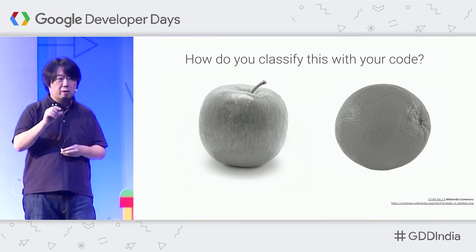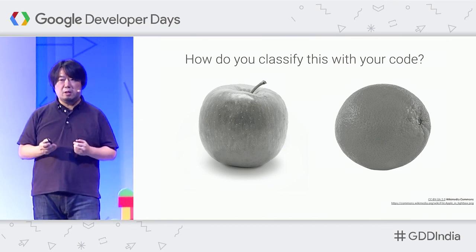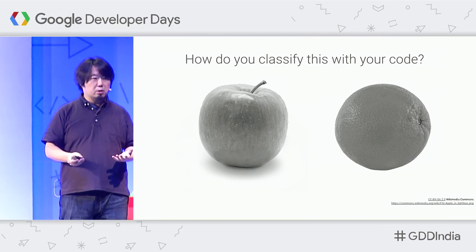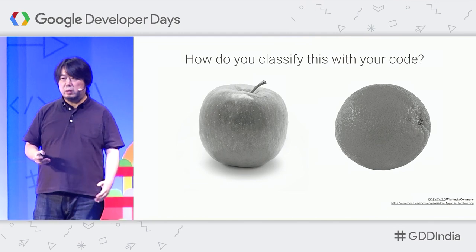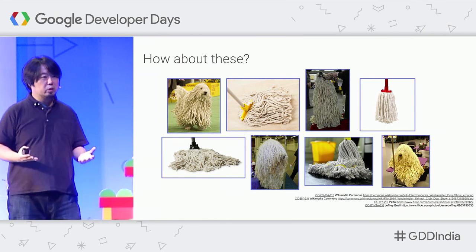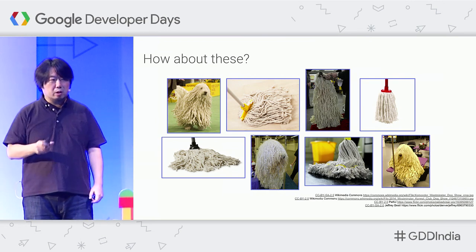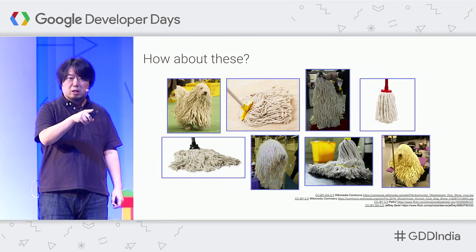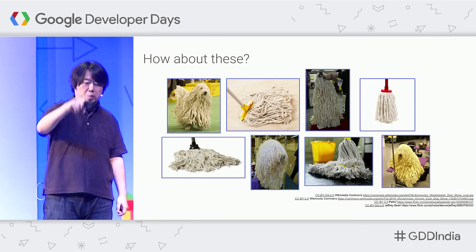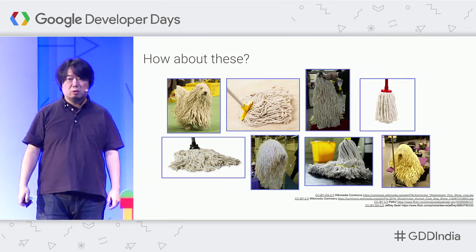In that case, you have to look at the shape, patterns, or texture of those images. And then your customer comes back again asking if you can also classify these other images — which look like mops or brooms, but if you look carefully, some of them are actually sheepdogs. The images at the top left or bottom right are not mops — they are dogs. How do you classify these images?